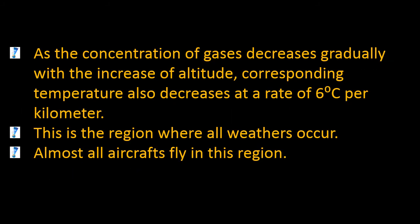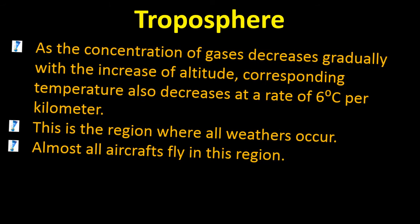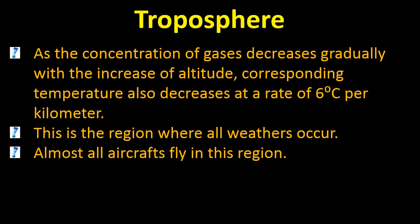As we move higher in the troposphere, the concentration of gases decreases gradually with increasing altitude, and the temperature also decreases at a rate of 6 degrees Celsius per kilometer. This is the region where almost all weather occurs, and almost all aircraft fly in this region.